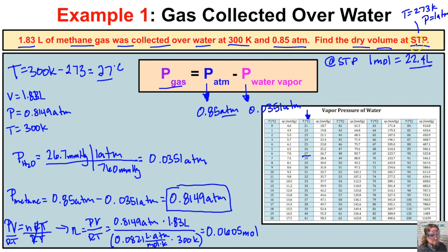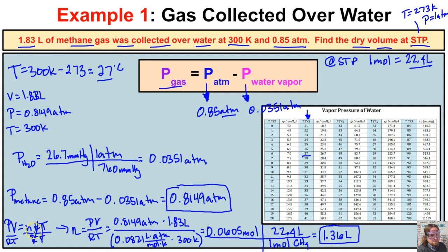Now that we have 0.0605 moles of methane and the question asks for volume at STP, we use the molar volume: 1 mole of gas = 22.4 liters at STP. So we multiply 0.0605 mol × 22.4 L/mol = approximately 1.36 liters. That is the dry volume of methane at STP.